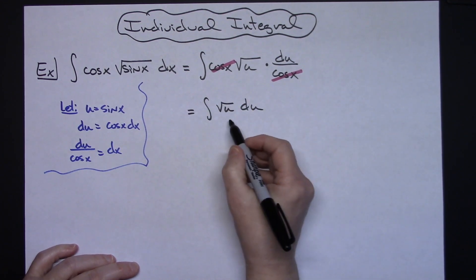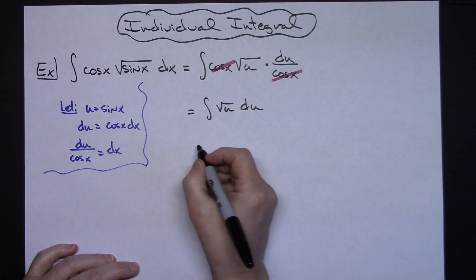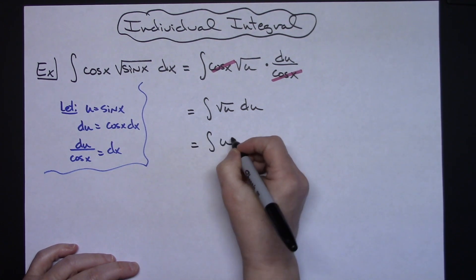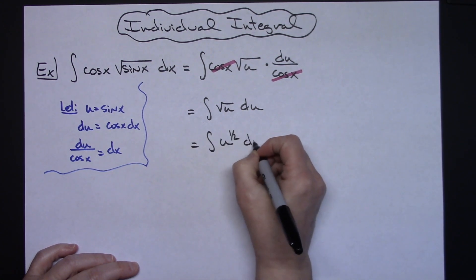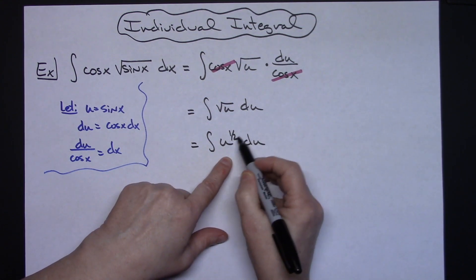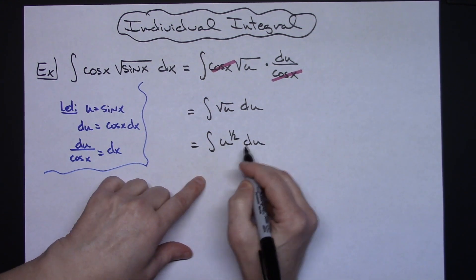The easiest way to integrate this would be to rewrite that into exponential form so I'll have the integral of u raised to the one half du and then we can add one to that exponent which will give us three halves.